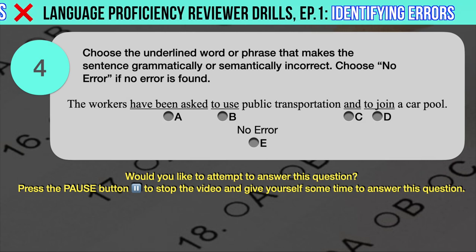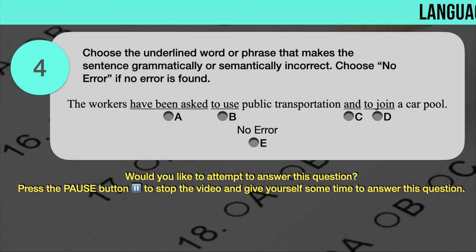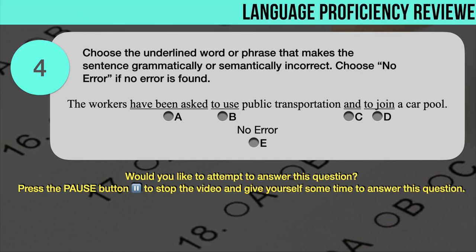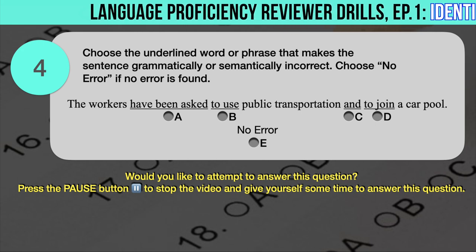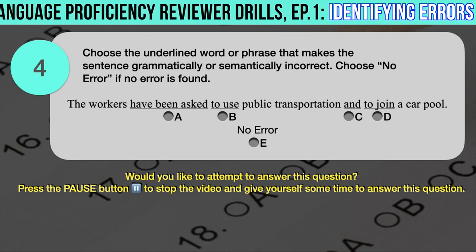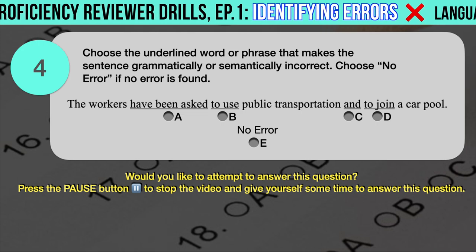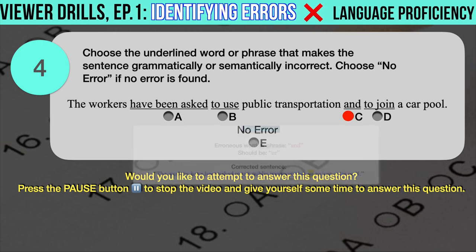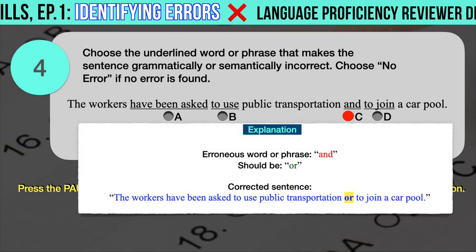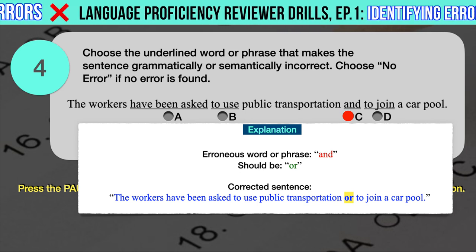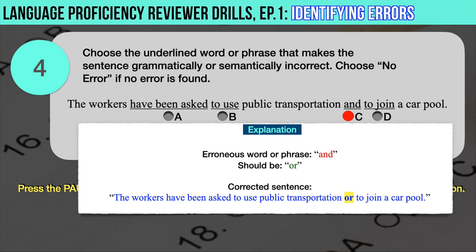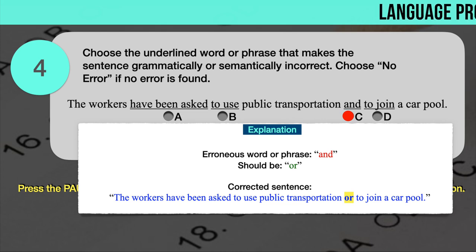Drill question number 4. Choose the underlined word or phrase that makes the sentence grammatically or semantically incorrect. 'The workers have been asked to use public transportation and to join a carpool.' The underlined words are: A. Have been asked, B. To use, C. And, D. To join. The correct answer is C. The erroneous word is 'and' — it should have been 'or.' The workers cannot use public transportation and join a carpool at the same time; they must choose only one option. The correct sentence: The workers have been asked to use public transportation or to join a carpool.